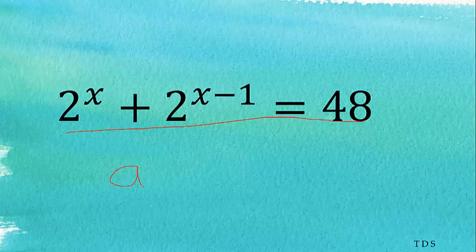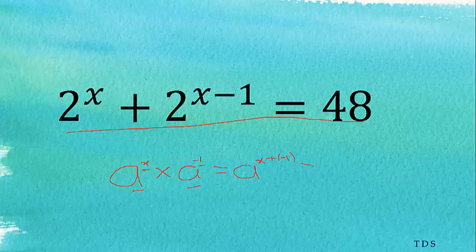e to the power x times e to the power minus 1 is the same as e to the power x minus 1, because when we multiply, we add the exponents. So x plus minus 1 gives us x minus 1.